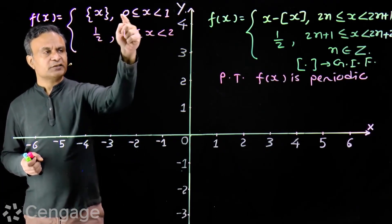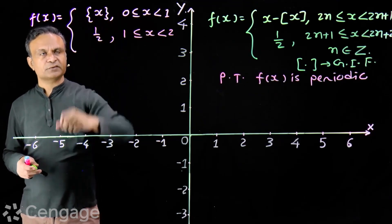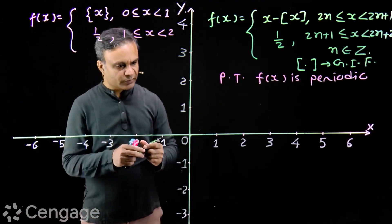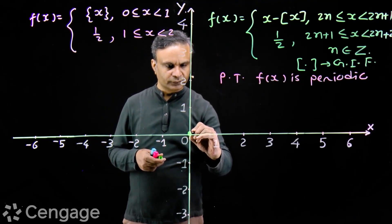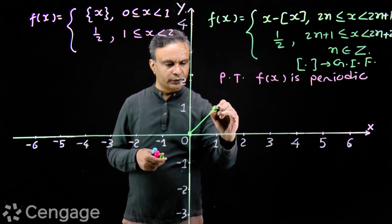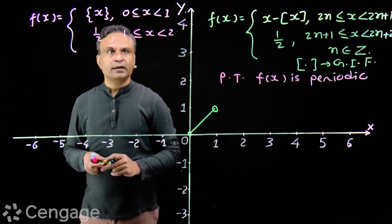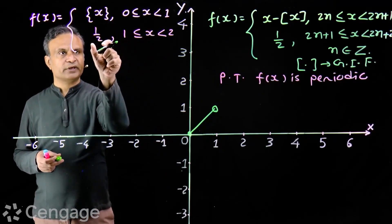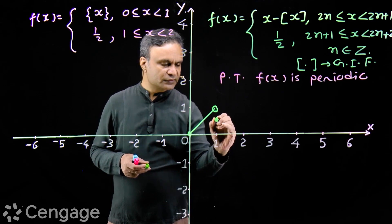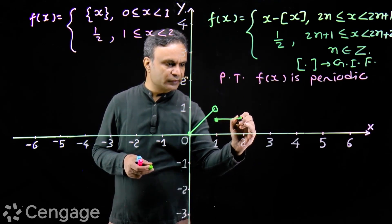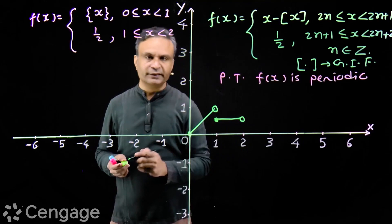Now we draw the graph of the function for x in [0, 2). For 0 to 1, f(x) equals the fractional part of x, which is part of the line y equals x — including the left endpoint and excluding the right endpoint since x is less than 1. For 1 less than or equal to x less than 2, f(x) equals 1/2, so we have a horizontal line segment at y equals 1/2.